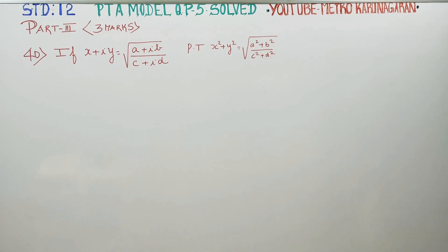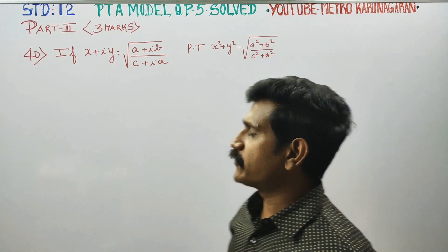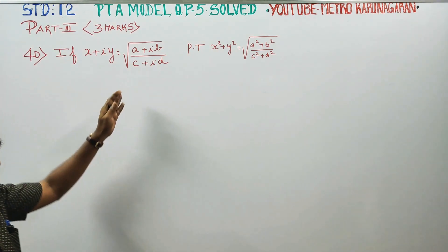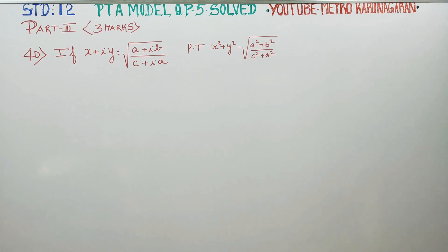Dear 12th standard students, I am Etro Karanagaran. In PTA model question paper 5, sum number 40, if x plus iy is equal to square root of (a plus ib) by (c plus id), you have to prove this one.